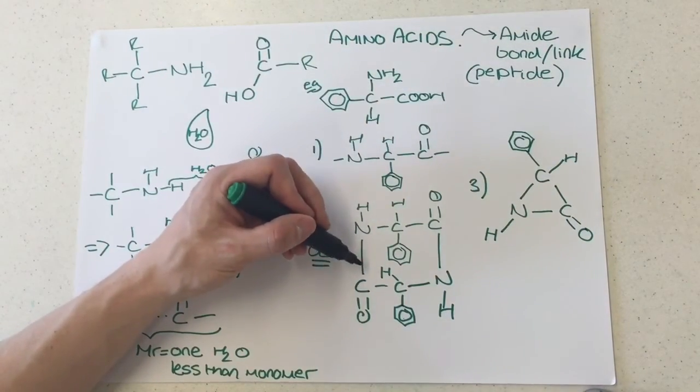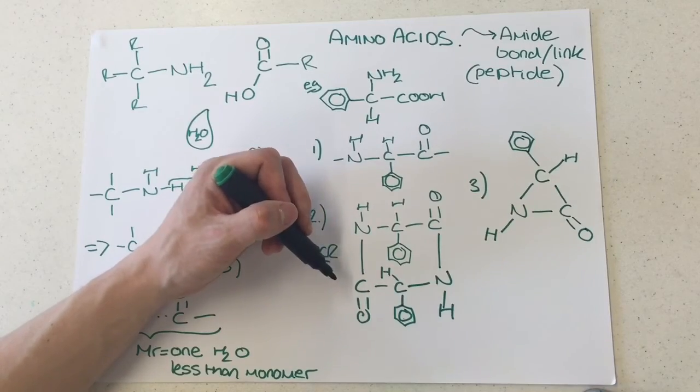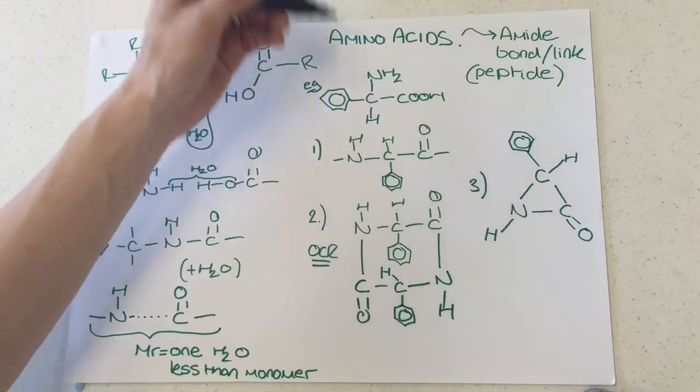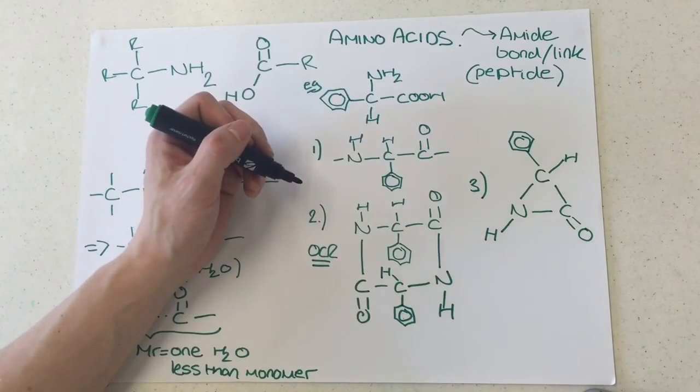This one here, however, doesn't have that MR. It has a very different MR. So, it would be double what this one would be. So, this would be like the monomer, twice, but with two H2Os missing.